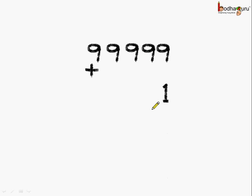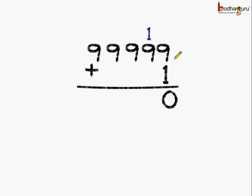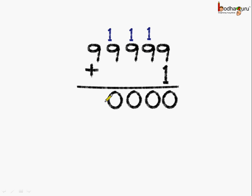If we add 1 to it, what do we get? 9 plus 1 is 10, carry over 1. Now here adding 9 plus 1 again we get 10 — so 0, 1 is carry. Again 9 plus 1 is 10 — 0 here, 1 is carry. 9 plus 1 is 10 — 0 here, carry. And lastly 9 plus 1 is equal to 10.